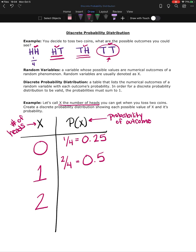And then finally, the probability that we get two heads is one out of four or 0.25.